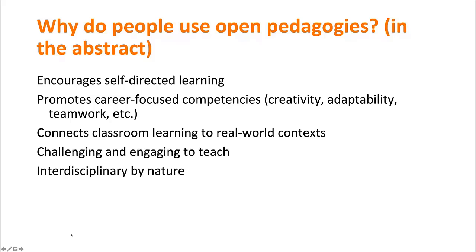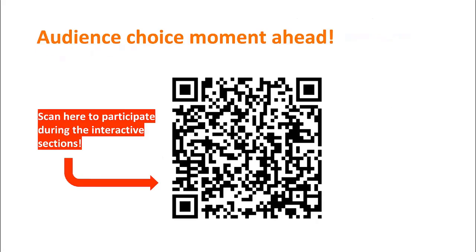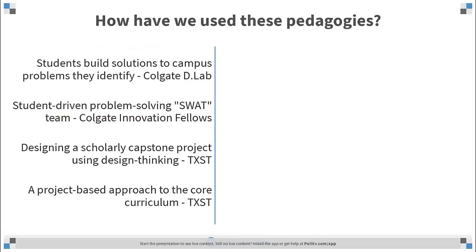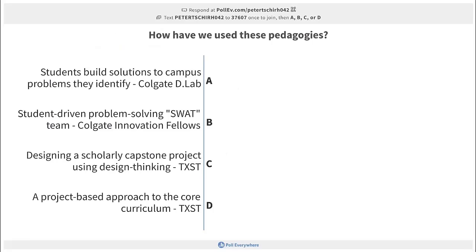This brings us to the audience choice moment. We've prepared four scenarios—we only have time to go into one of them, and it's a choose-your-own-adventure. The first scenario is a project at Colgate: the D-Lab project, where students build solutions for campus problems they themselves identify. The second, also from Colgate, is a student-driven problem-solving team called the innovation fellows. Then we have two from Texas State: one is a capstone project using design thinking, and another is a project-based approach to the core curriculum. Go ahead and take a moment to cast your votes.